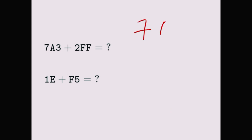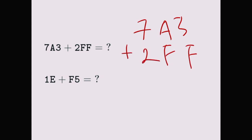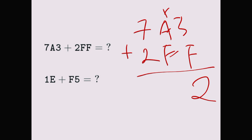We have 7A3 plus 2FF. Three plus F — F is 15 — so three plus 15 is 18. 18 is bigger than 16, so we can't write 18. 18 divided by 16 is one remainder 10. 10 is A. Then carry the one: one plus A — which is 10 — plus F which is 15: that's 26. 26 divided by 16 is one remainder 10. 10 is A, so we write A and carry the one.